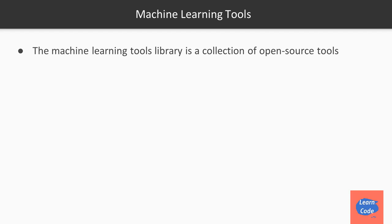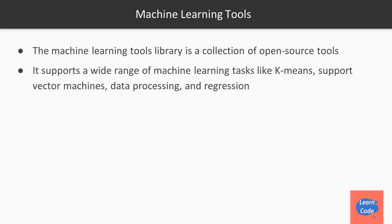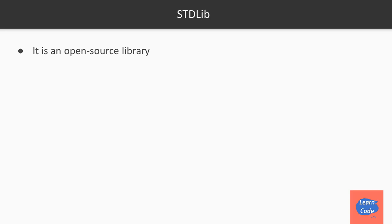Another set of tools is machine learning tools, a collection of open source tools that supports a wide range of ML tasks like k-means, support vector machines, data processing, and regression. The advantage of combining ML tools with TensorFlow.js is that you get the whole spectrum of machine learning algorithms. Since TensorFlow focuses heavily on deep learning, you may not always need it — that's where machine learning tools comes in handy. It is also designed to be similar to scikit-learn, so transitioning will be easy.